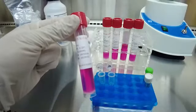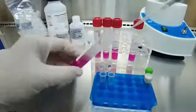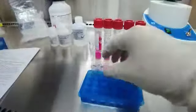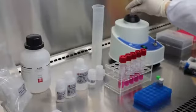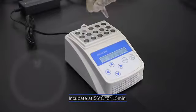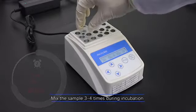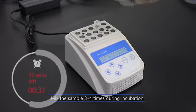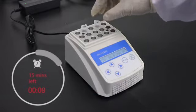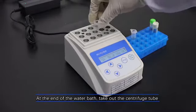Add 200 µL sample to the centrifuge tube. Add PBS buffer and mix well.